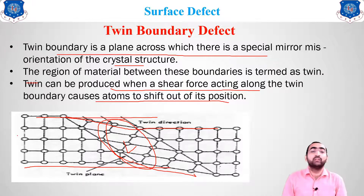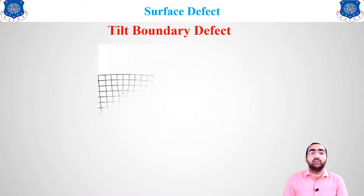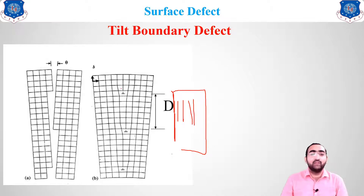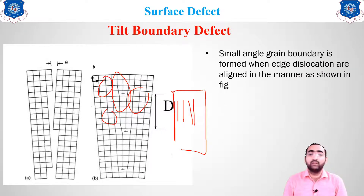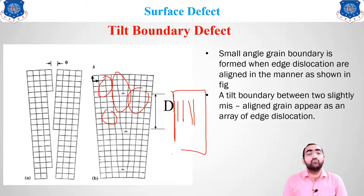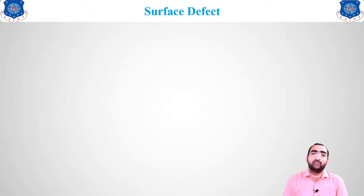The tilt boundary defect occurs when the boundaries of a material are tilted. In a structure where all atoms are in a straight line, if there is a small angle change at the boundaries, that is known as a tilt boundary defect. Small angle grain boundaries are formed due to edge dislocation — the original alignment changes orientation by a small angle. A tilt boundary between two slight misalignments appears as an array of edge dislocations.